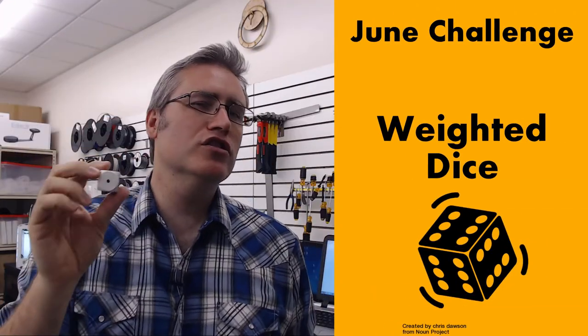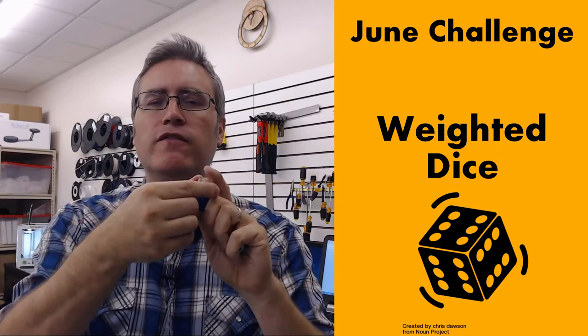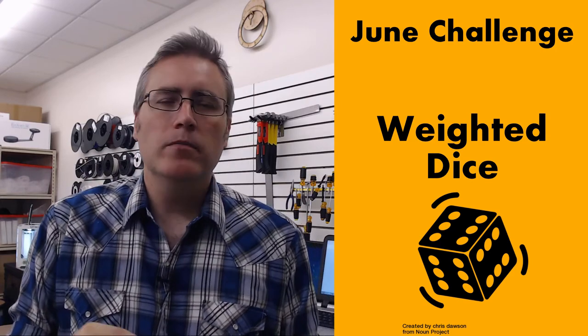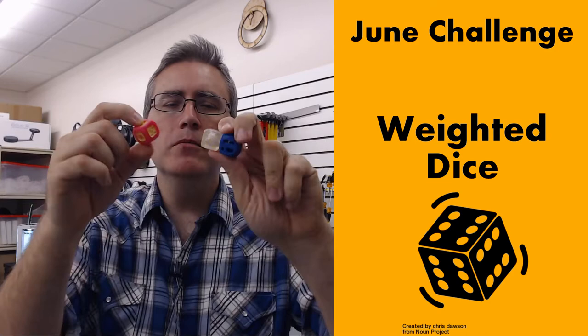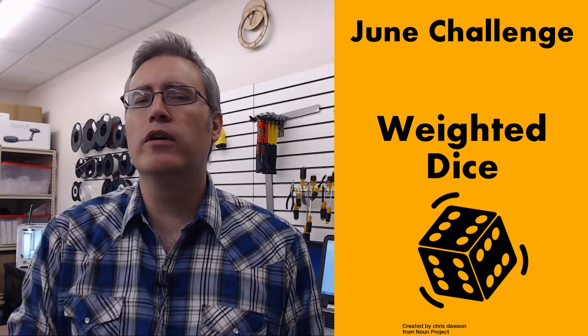Weighted dice look just like any other dice, but they're designed to fall to one side more often than another. You can use any design that you want and make them look however you want. That is not important. What is important is this.